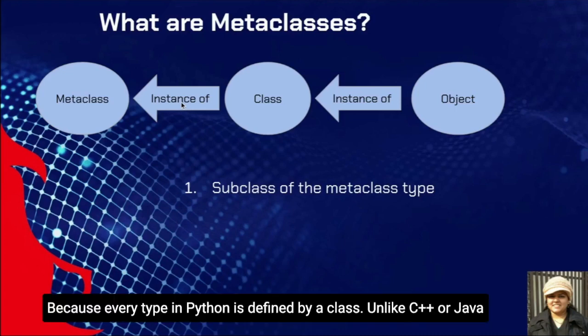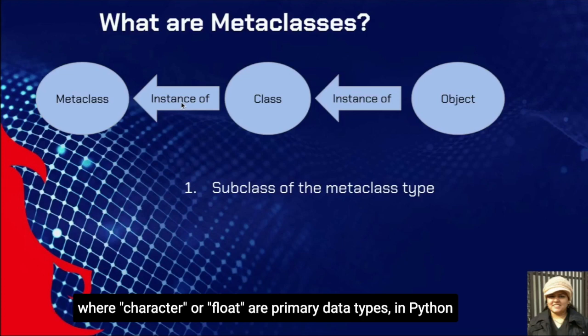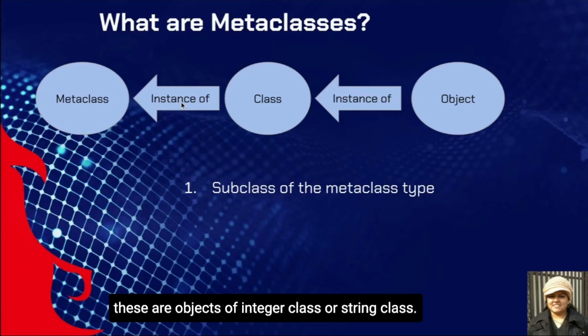That is why in Python, everything has some type associated with it, because every type in Python is defined by a class. Unlike C++ or Java, where int, character, and float are primary data types, in Python these are objects of integer class or string class.